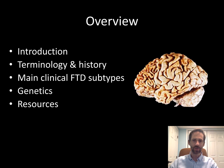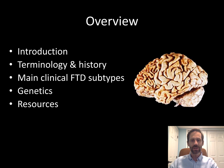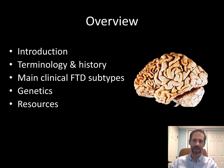Today I'm going to be giving an introduction to frontotemporal degeneration and its subtypes. We'll begin with a general introduction of frontotemporal degeneration or FTD, then dive deeper into the terminology and history. We'll discuss each of the major subtypes, including the behavioral variant or BVFTD, the non-fluent variant of primary progressive aphasia or PPA, and the semantic variant of PPA. We'll also discuss genetics and resources available to help people with FTD and their families.